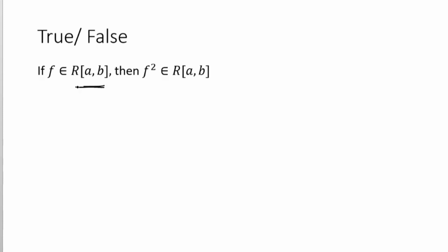The notation f ∈ R[a, b] means f is Riemann integrable on the closed interval [a, b]. The statement 'if f ∈ R[a, b], then f² ∈ R[a, b]' — meaning f squared is also Riemann integrable — is a true statement.